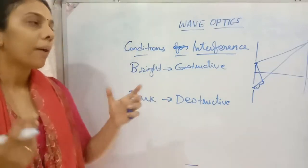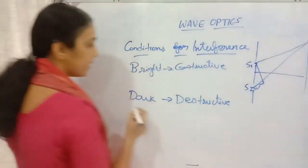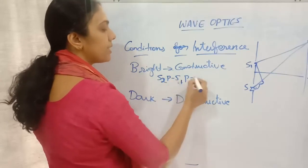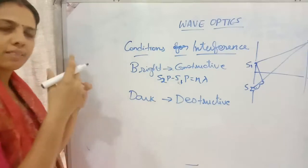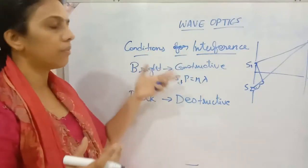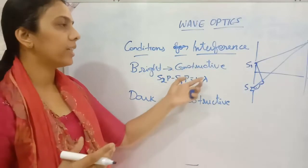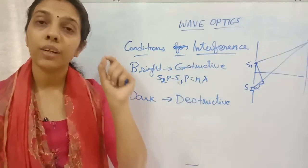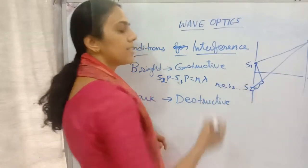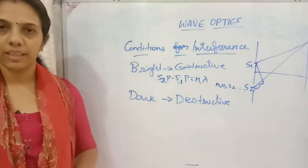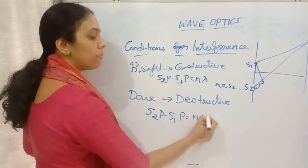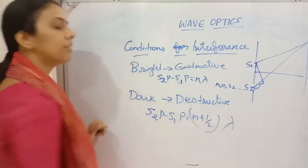If the path difference is S1P minus S2P, or S2P minus S1P — you can take the difference either way — that is equal to nλ. If the path difference equals nλ, where n = 0, 1, 2, 3, etc., then we say it is constructive interference. That is one of the conditions for constructive interference. In the case of destructive interference, S2P minus S1P equals (n + ½)λ — this is the condition for destructive interference.